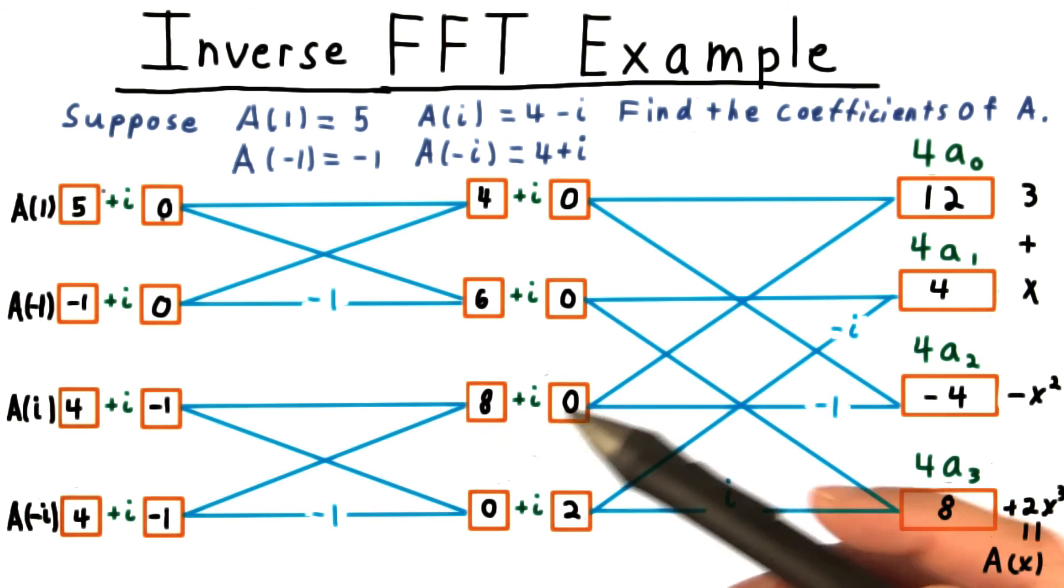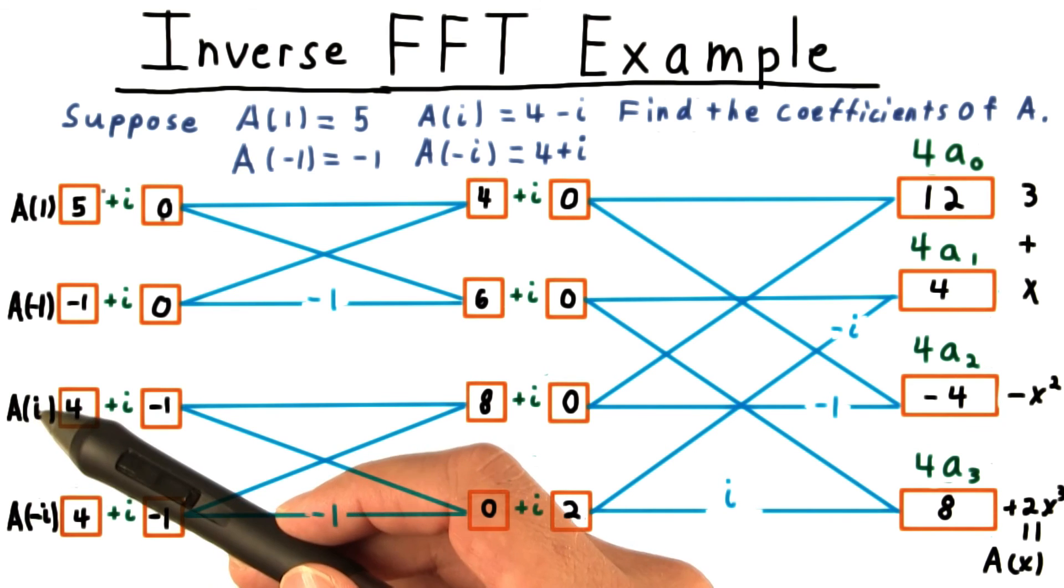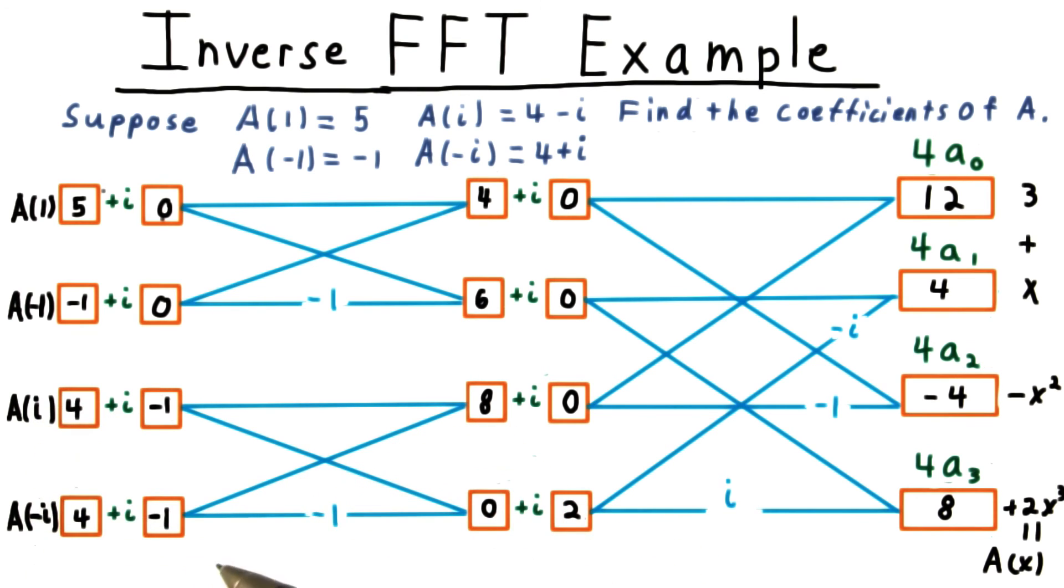We could have done the forward transform with omega equal to negative i, in which case I would have flipped these. And then the inverse transform would have used i here and negative i here, and that would have given us the same result.